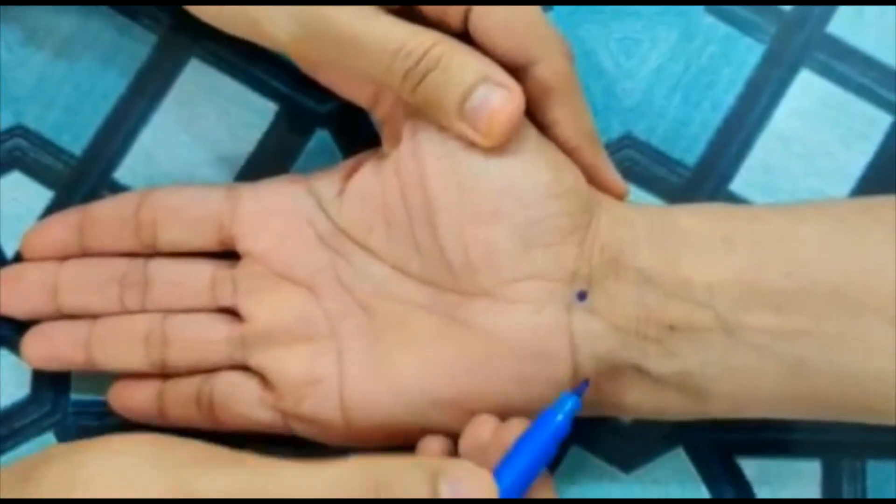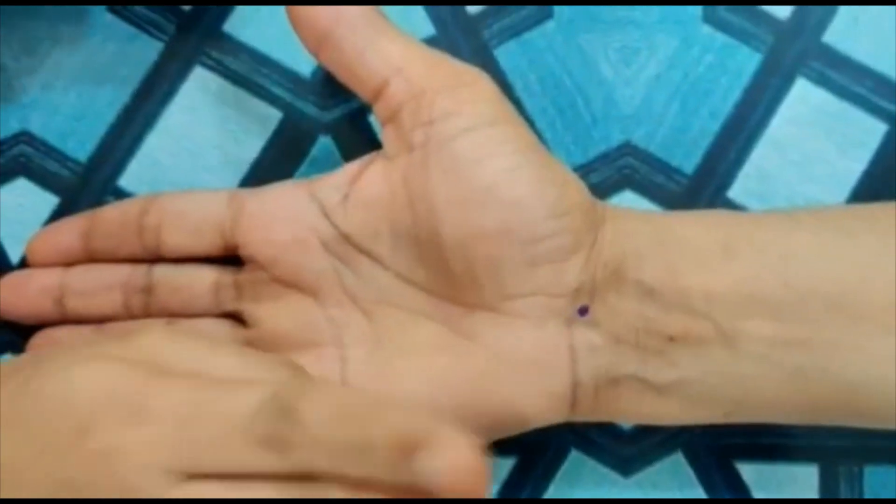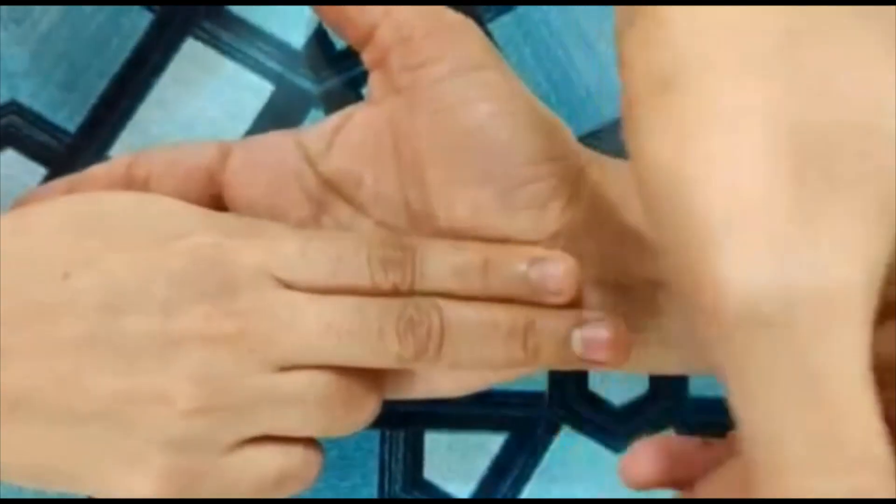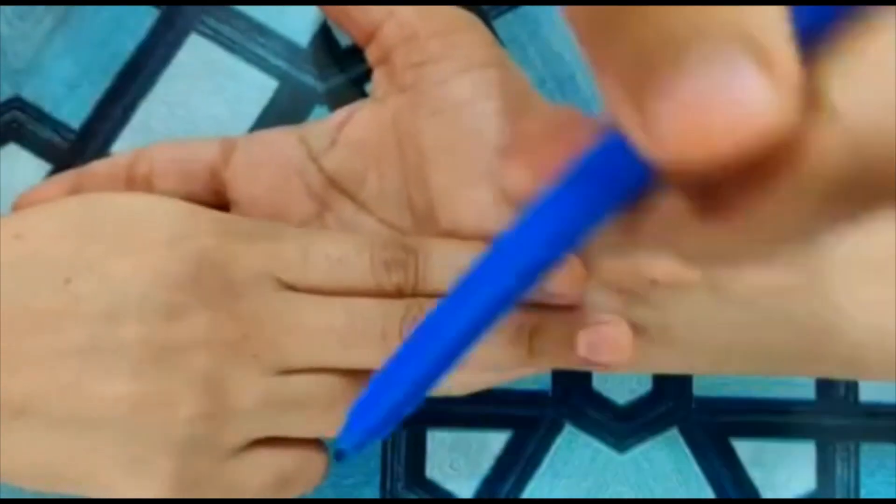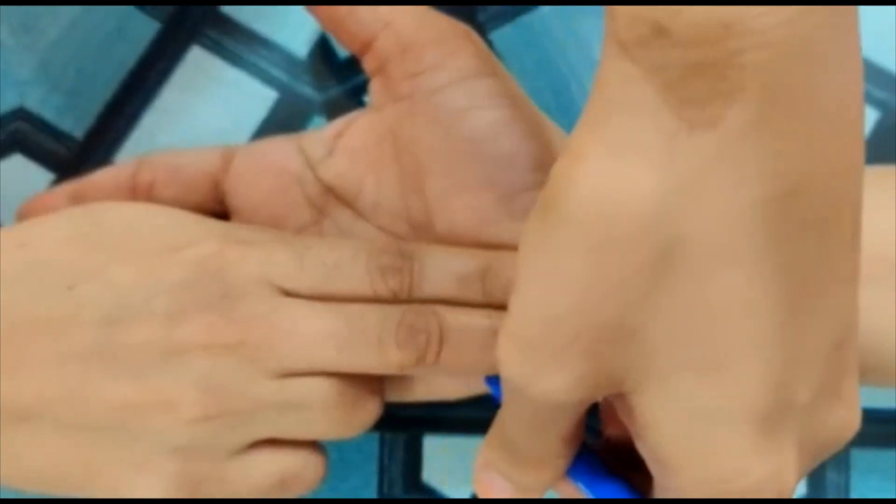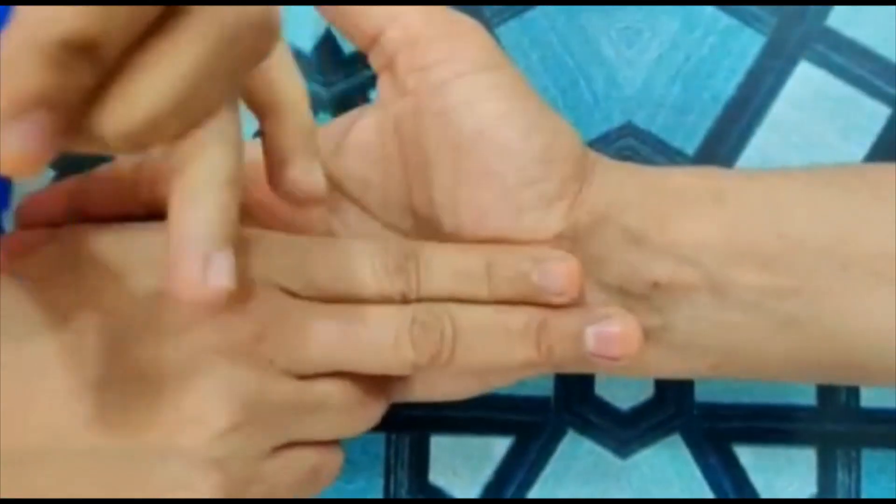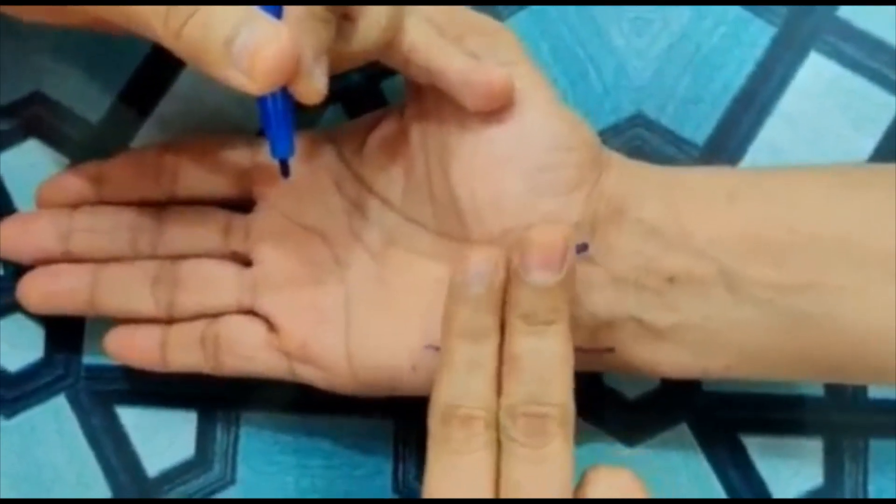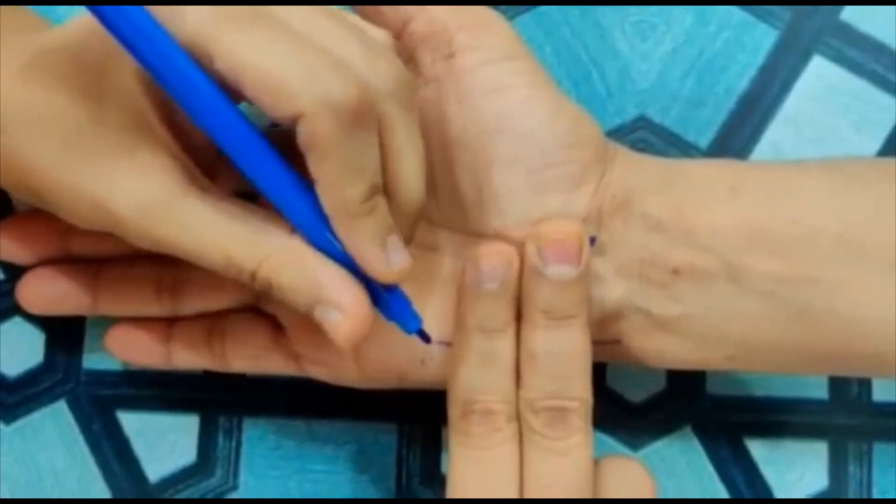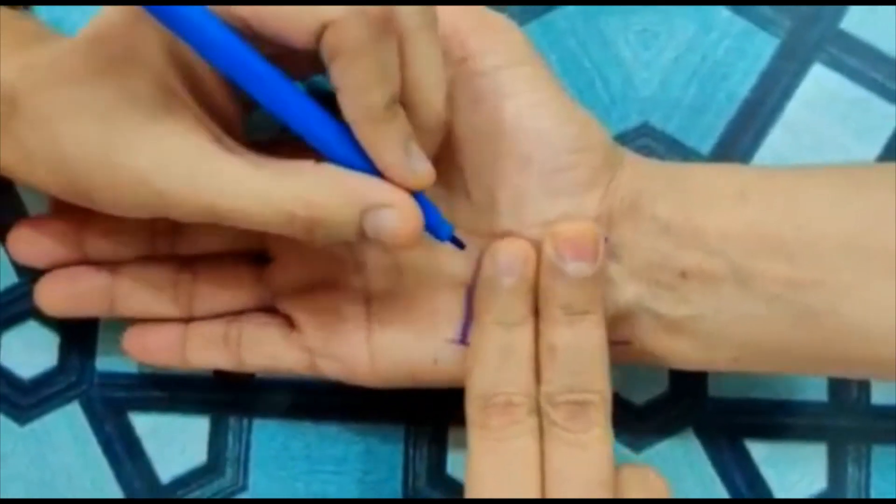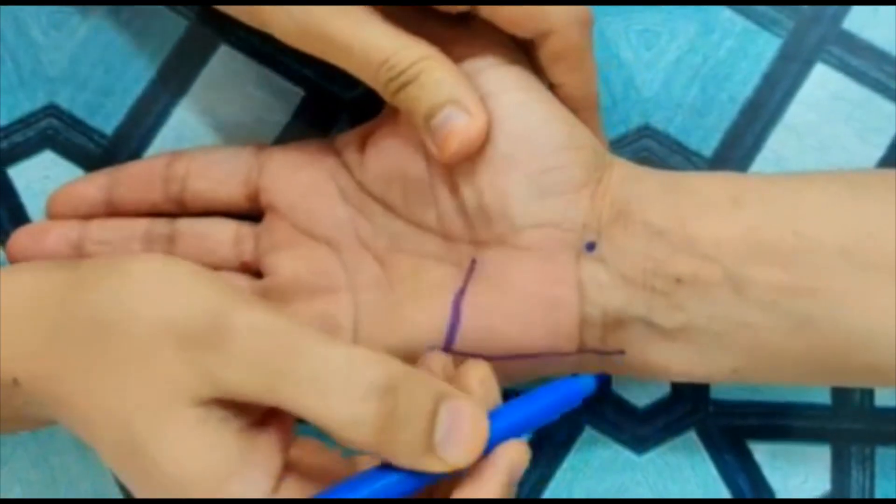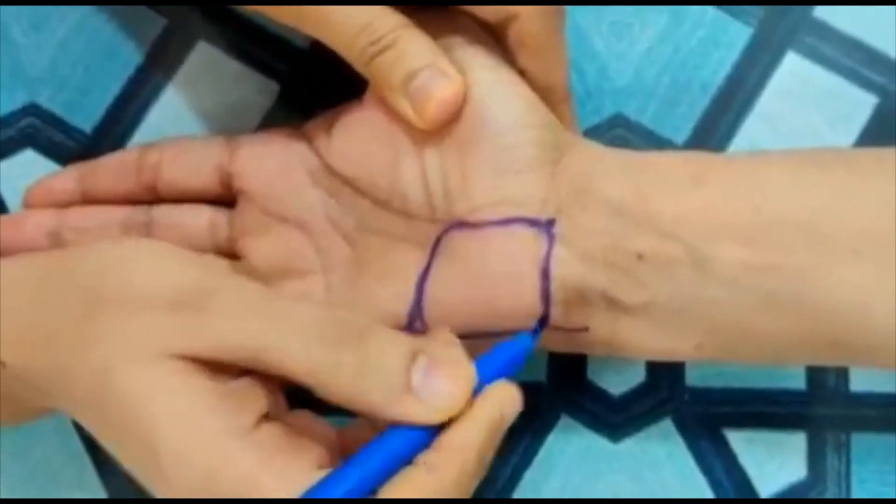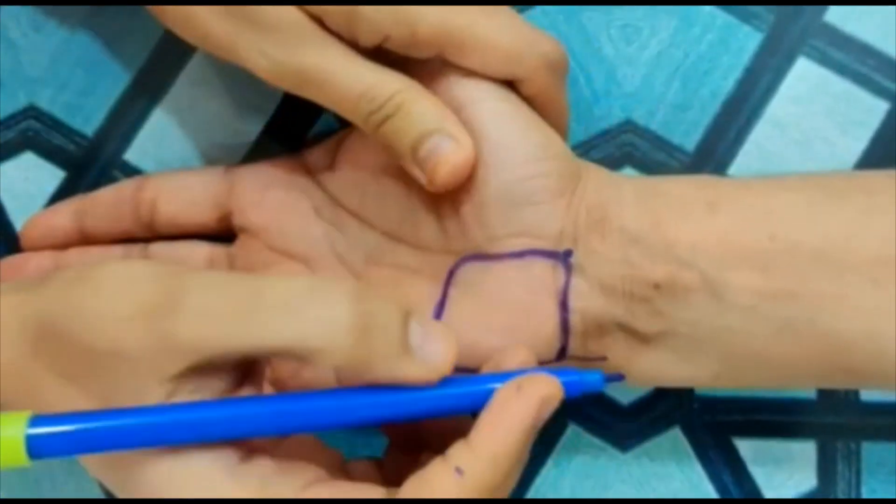Now we need to measure two fingers vertically. Look, from the center, two fingers vertical. And here I've drawn a line. Here I've made a mark, and now I'm going two fingers.